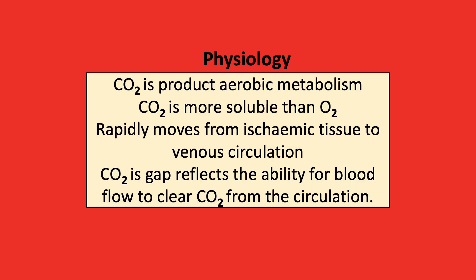Let's understand the physiological principles between carbon dioxide and cardiac output. CO2 is produced during aerobic metabolism and is more soluble than oxygen, and therefore rapidly moves out of ischemic tissues into the venous circulation. Therefore, the CO2 gap reflects the ability of blood flow to clear carbon dioxide from the circulation.